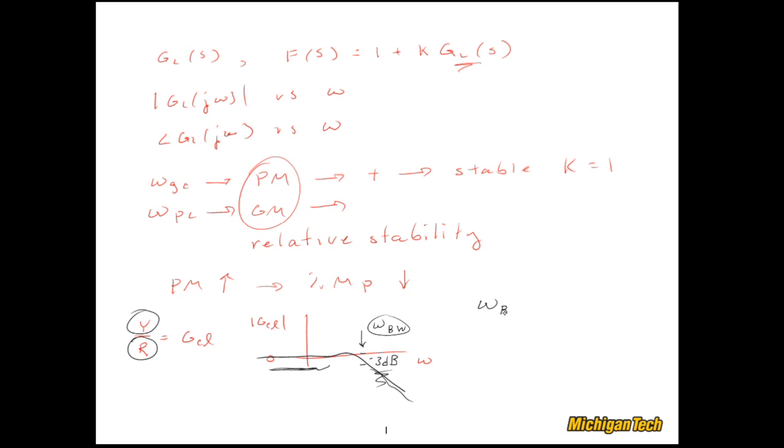Now, the closed loop bandwidth is actually related back to the gain crossover frequency. It's roughly 1.4, maybe 1.5, it varies a little bit, of omega GC. The bottom line is the closed loop bandwidth is going to be greater than the gain crossover frequency, maybe 40 or 50% greater.